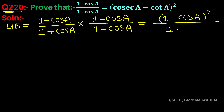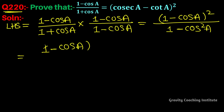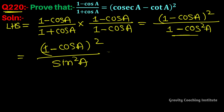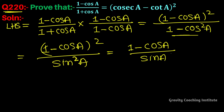So the denominator becomes 1² - cos²A, which equals 1 - cos²A. And 1 - cos²A has the formula sin²A. So we combine to get (1 - cos A)² / sin²A, which is [(1 - cos A) / sin A]².